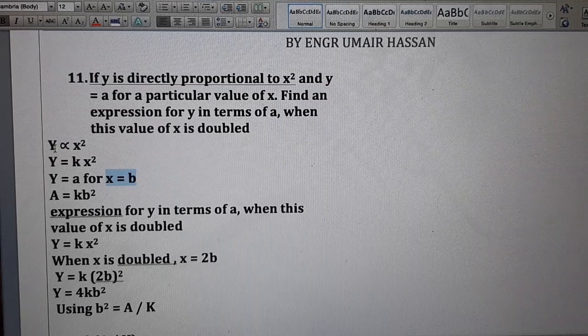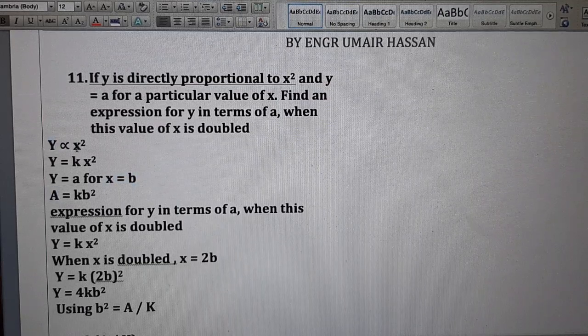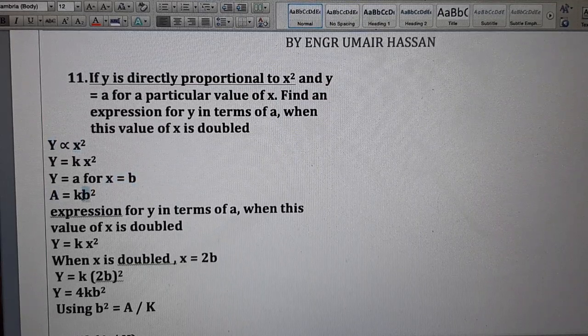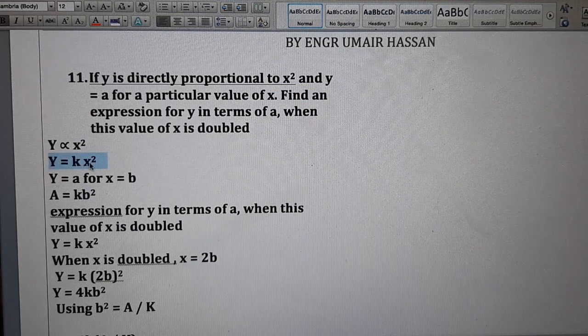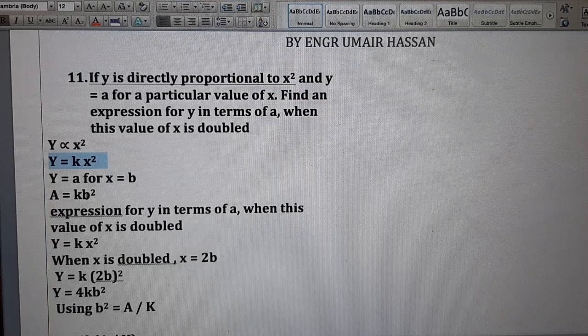So, using y equal to a and x equal to b in this equation, y equal to a, x equal to b, a is equal to kb square.